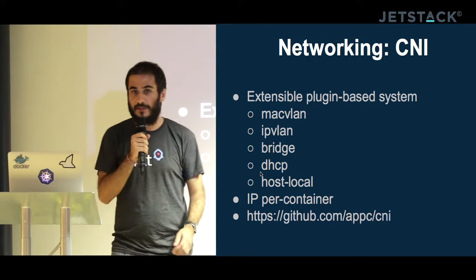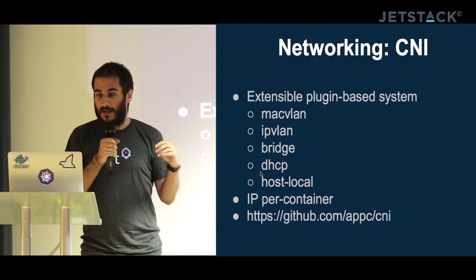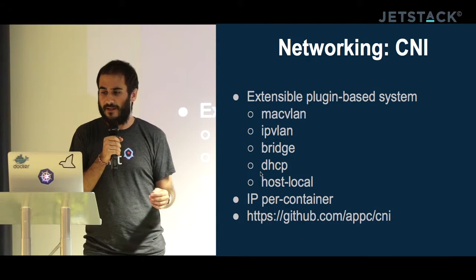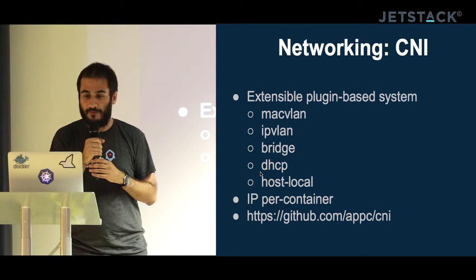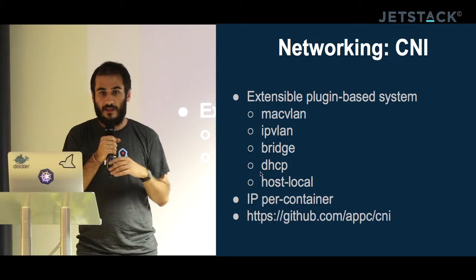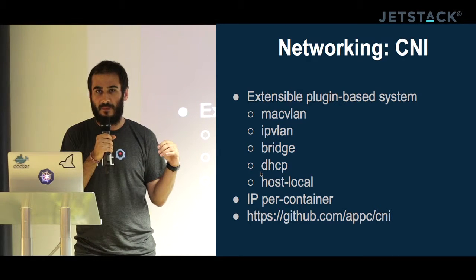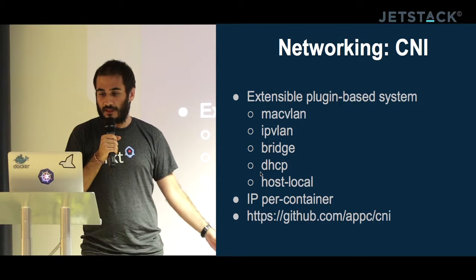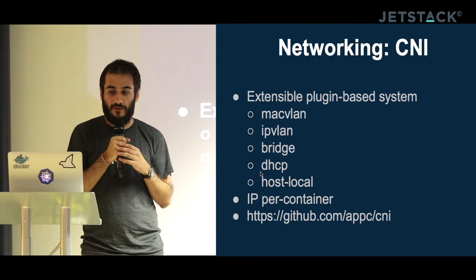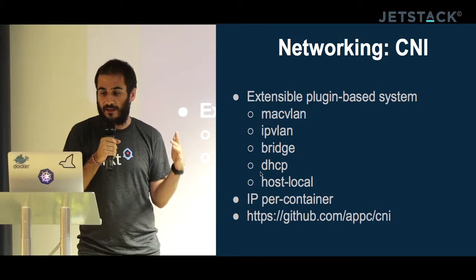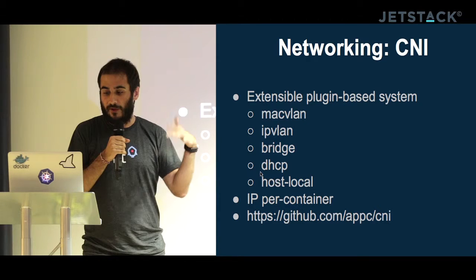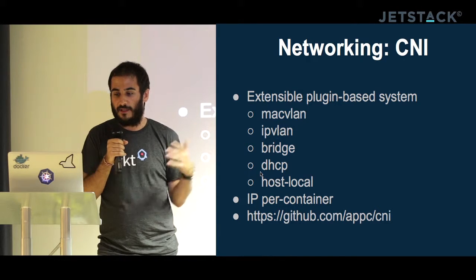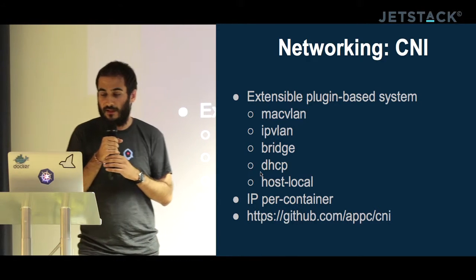Networking is a very interesting topic because it's complicated. In Rocket we have CNI — Container Network Interface — which is an extensible plugin-based system. It has several types of network configurations: macvlan and ipvlan are the technologies used, or a bridge or simple bridge. Every container gets an IP via DHCP or manually with the host-local plugin. It's very customizable.